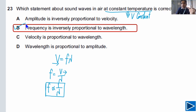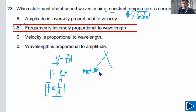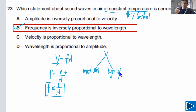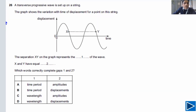If frequency is higher, the wavelength of that wave will be shorter, and vice versa. Also understand that wave speed depends on two factors: the medium — the same wave in different media has different speeds (for example, speed of sound in air versus water is different) — and the type of wave. Different types of waves in the same medium have different speeds, for example speed of light versus speed of sound in air.